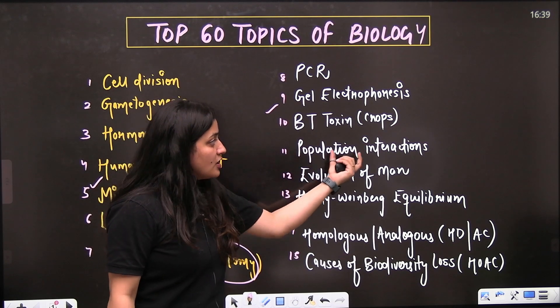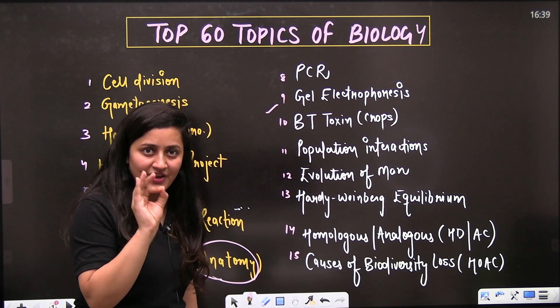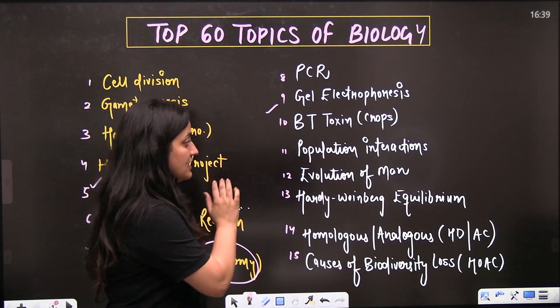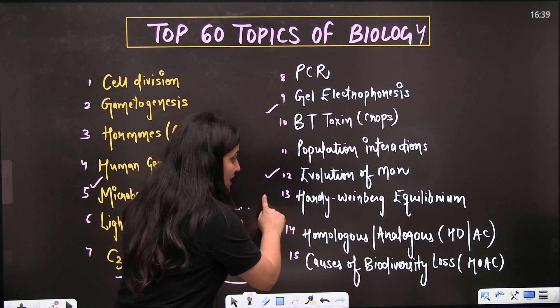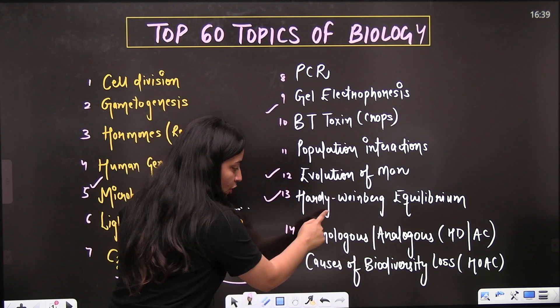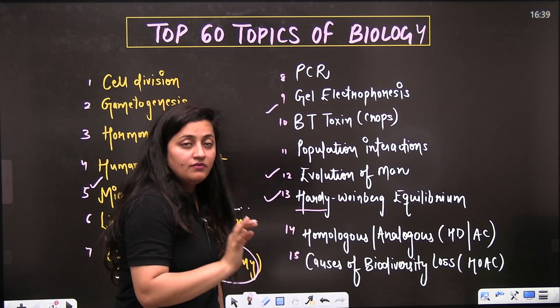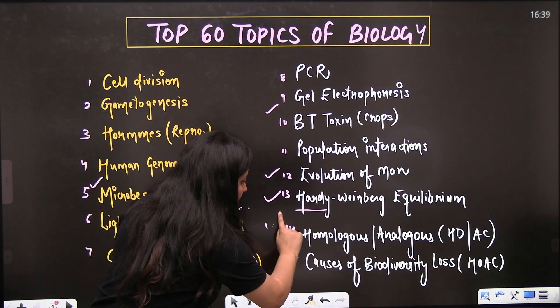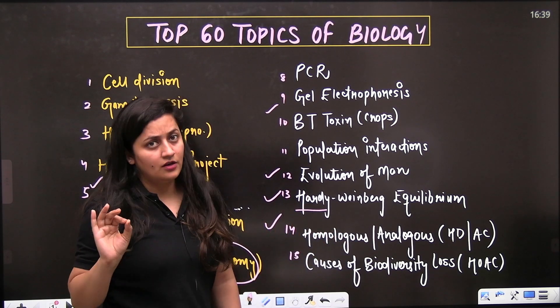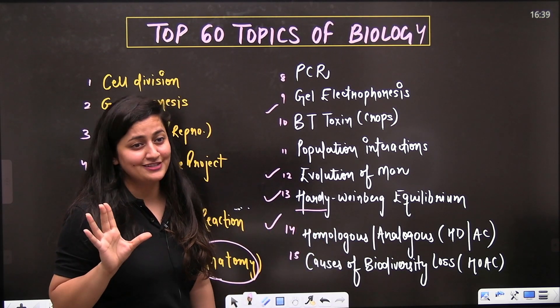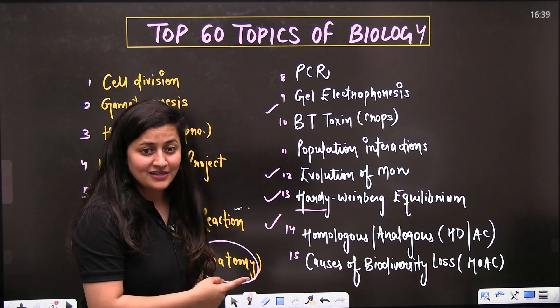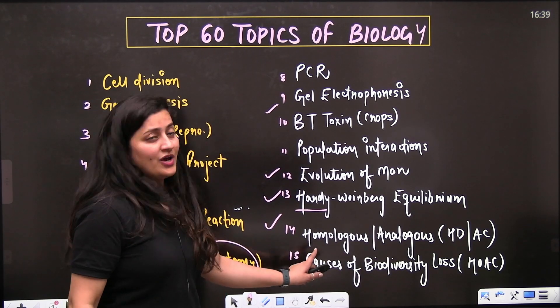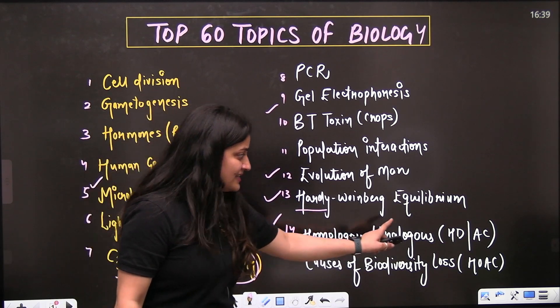From ecology, population interaction is very easy and simple. Evolution of man is important, Hardy-Weinberg equilibrium is important - along with this you should even revise genetic drift. Then comes the homologous and analogous organs - a very favorite question of the examiner, even in CBSE board exams. I hope you remember this because I always use this trick: HDAC - homologous divergent, analogous convergent.